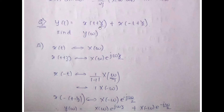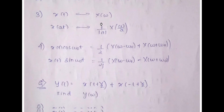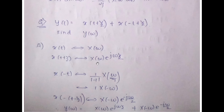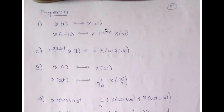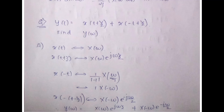Numerical: y(t) = x(t + 1/2) + x(−t + 1/2). Find Y(ω). Y(ω) is the sum of two individual Fourier transforms. For the first term, x(t) ↔ X(ω), and x(t + 1/2) ↔ X(ω) e^(jω·(1/2)), since x(t − t₀) ↔ e^(−jωt₀) X(ω), and here t₀ = −1/2, giving a positive exponent.